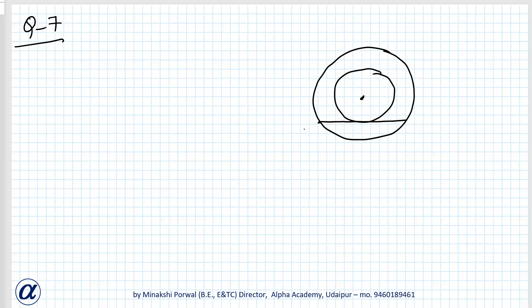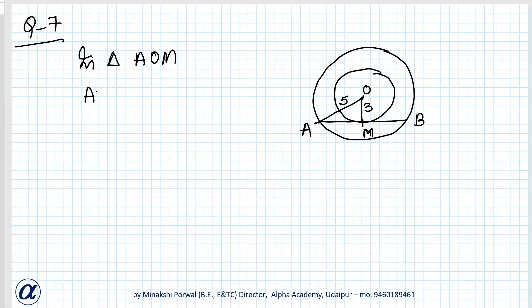Let AB be the chord of the larger circle which touches the smaller circle. Let M be the point of contact and O the center. So OM equals 3 (radius of smaller circle) and AO equals 5 (radius of bigger circle). In triangle AOM, AO² = OM² + AM², so 5² = 3² + AM².